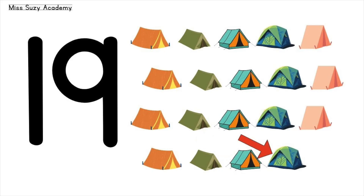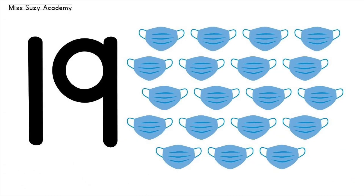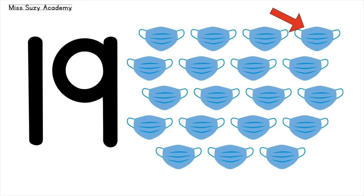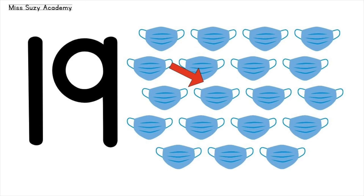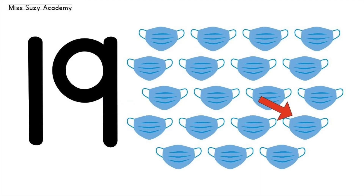19 pants. 19 masks: 1, 2, 3, 4, 5, 6, 7, 8, 9, 10, 11, 12, 13, 14, 15, 16, 17, 18, 19. 19 masks!